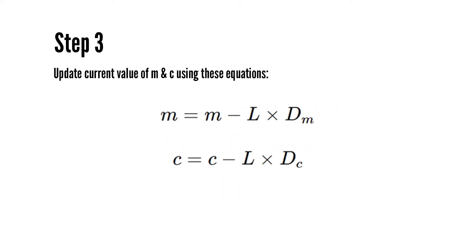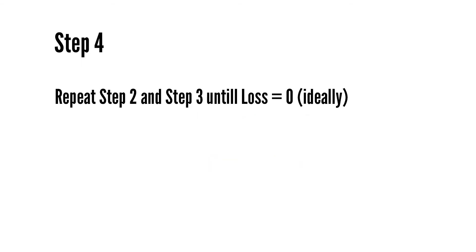Next, we update the current values of m and c using the equations: m = m − l × dm, and c = c − l × dc, where l is the learning rate. With each update, our accuracy increases and we get closer to our goal. We repeat this process until the loss function reaches a very small value, ideally zero.